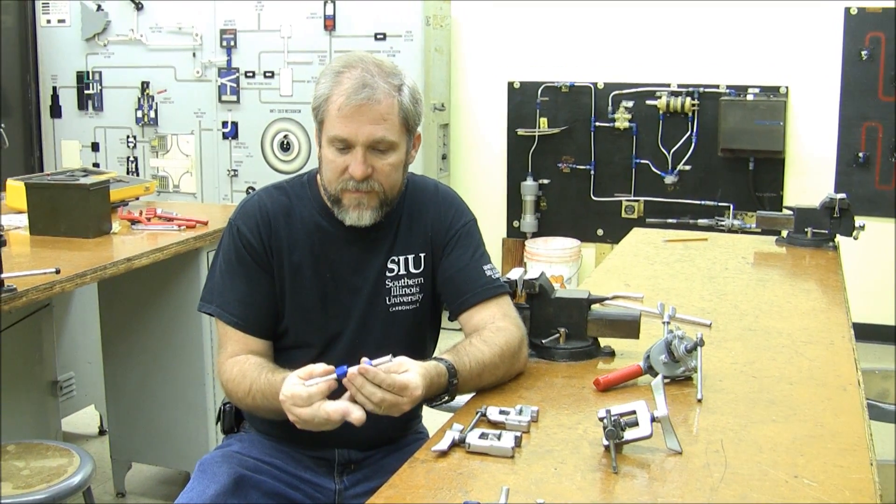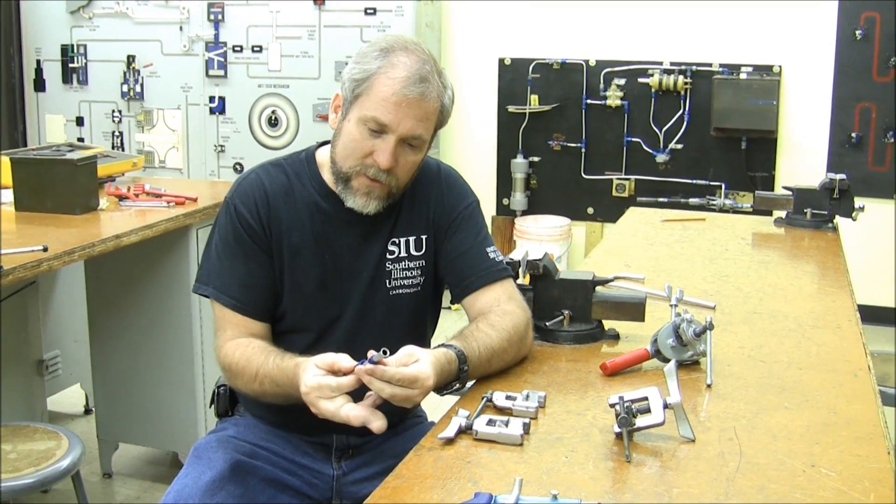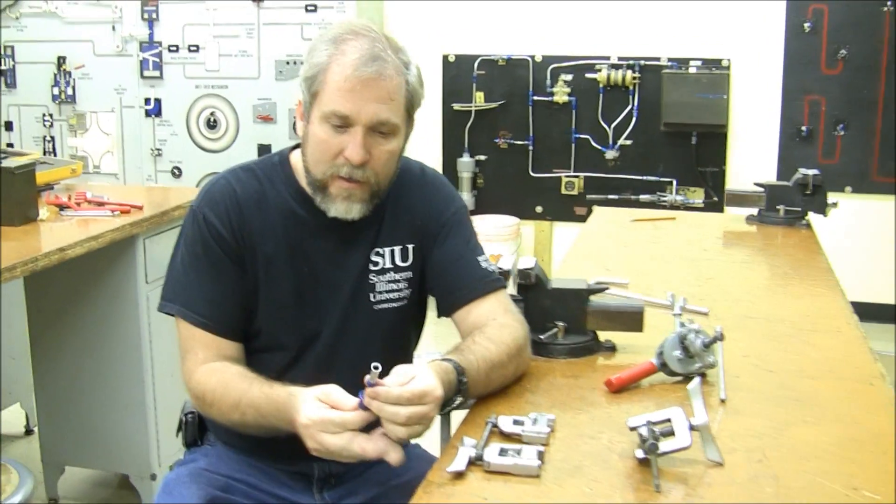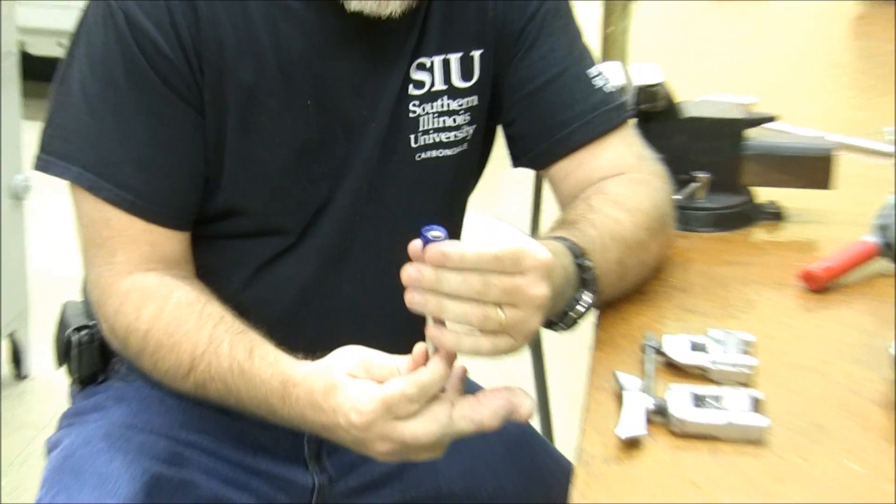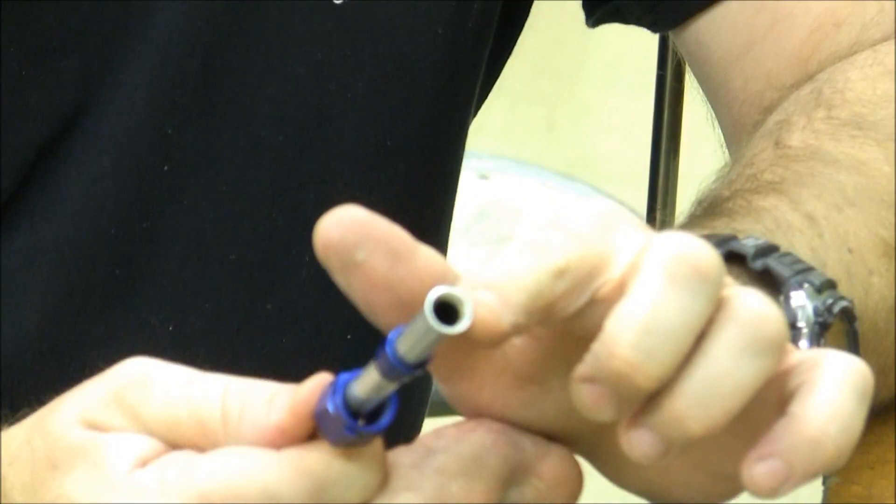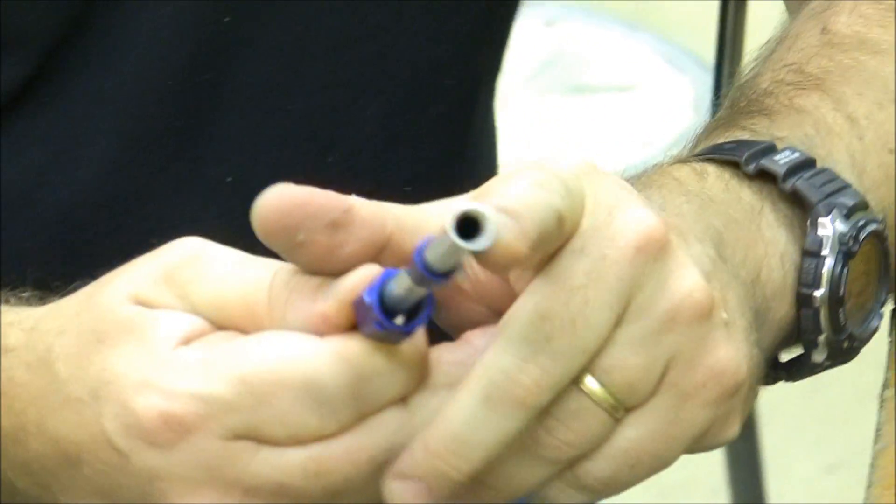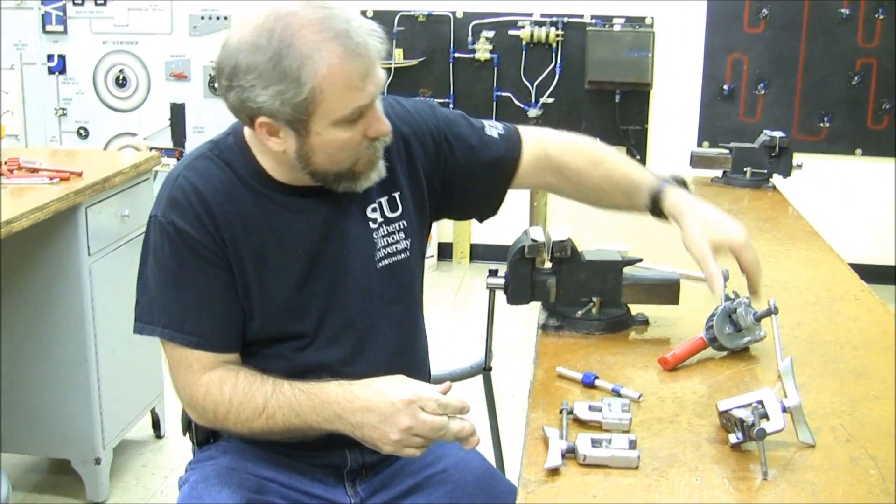The most common way that we're going to terminate a rigid tube is to end it in a flare. Most of those flares are going to get a little backup nut and then a B-nut across the top of them. To make that flare, we're going to have to use some different flare tools. I've got a couple of different common types of flare tools.